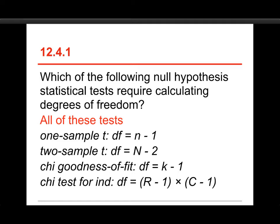For the two-sample t, the df is capital N minus 2, which is actually sample 1 minus 1 plus sample 2 minus 1. Chi-squared goodness-of-fit is k, the number of categories minus 1, and the chi-squared test for independence is the number of rows minus 1 times the number of columns minus 1. So degrees of freedom all the way around.